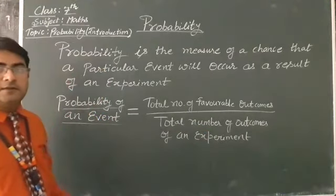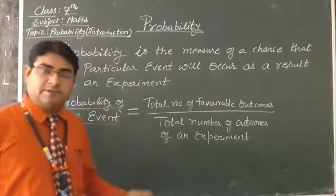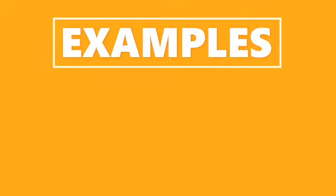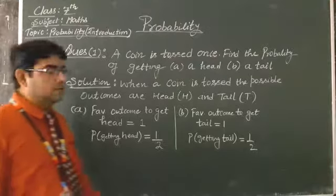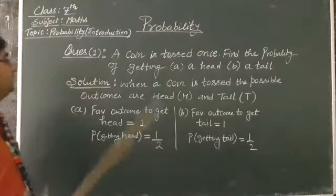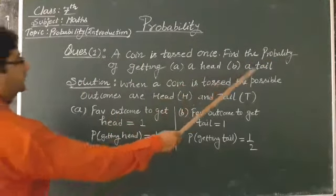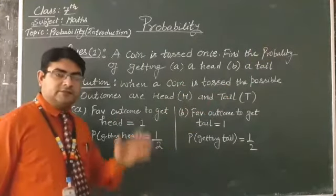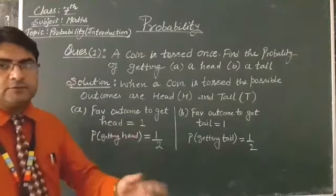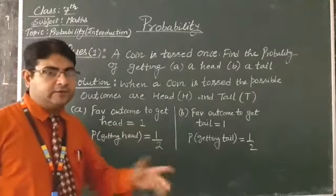So let's understand these terms by an example. My dear students, the question is: a coin is tossed once, find the probability of getting a head and a tail. When a coin is tossed, there are two possible outcomes: one is head, one is tail.